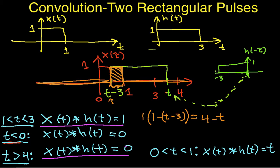So I have 4 minus T. And this picture holds whenever T is between 3 and 4. So I have T between 3 and 4 implies that the convolution is equal to 4 minus T.